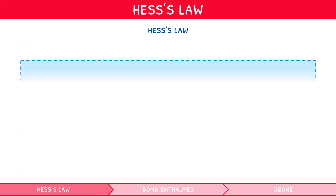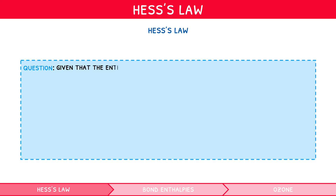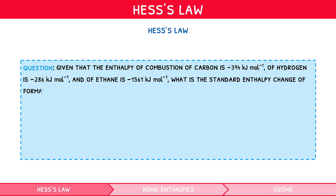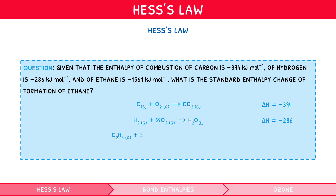Let's look at an example question. Given that the enthalpy of combustion of carbon is −394 kJ/mol, of hydrogen is −286 kJ/mol, and of ethane is −1561 kJ/mol, what is the standard enthalpy change of formation of ethane? First, write equations to show the enthalpy of combustion for each molecule — remember your definition, it is for one mole being combusted. So: C + O₂ → CO₂; H₂ + ½O₂ → H₂O; and C₂H₆ + 3½O₂ → 2CO₂ + 3H₂O.